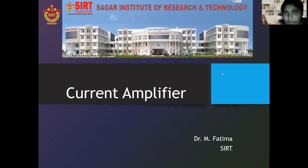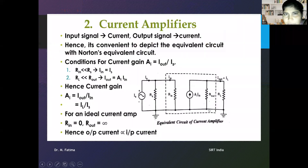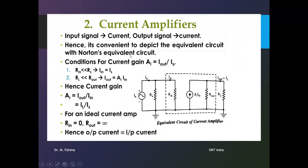Good morning, I'm Dr. Fatima. Today I'm covering the current amplifier. As you can see here, the equivalent circuit diagram is shown. In this current amplifier, the gain is denoted by Ai, which is equal to output current divided by source current. The source current is the current given to the input of the amplifier.